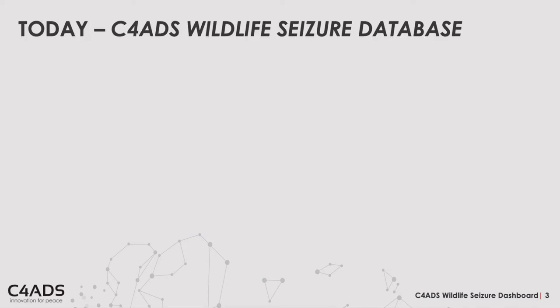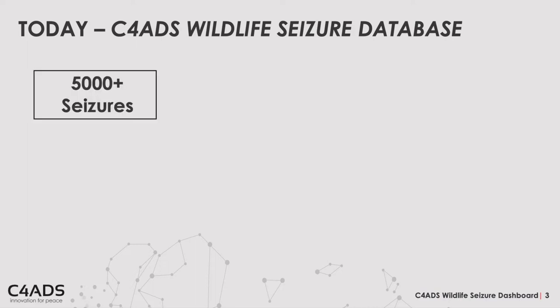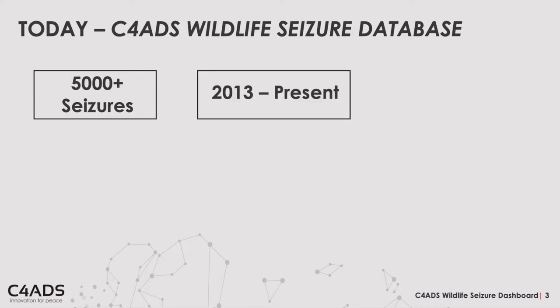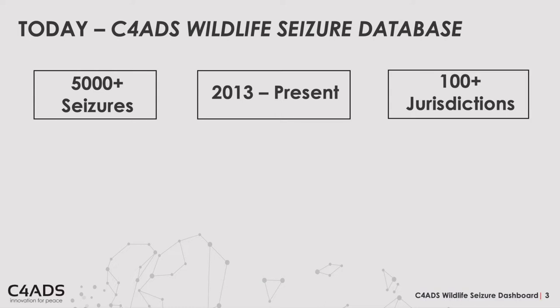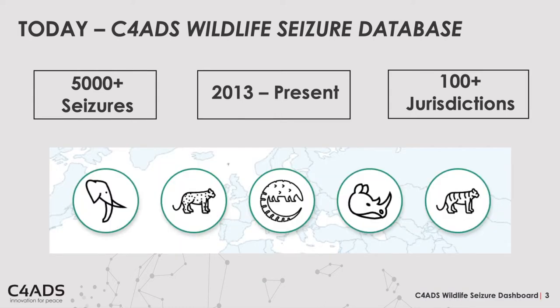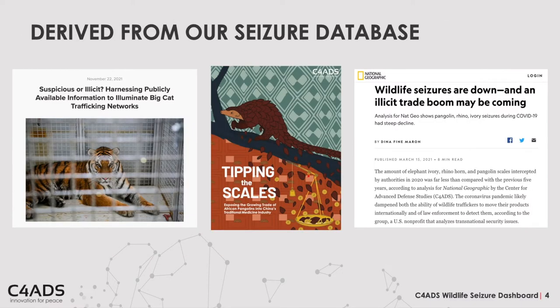Today, the C4ADS Wildlife Seizure Database contains information on over 5,000 seizures from 2013 to the present, spanning over 100 jurisdictions, all transportation sectors, and five key categories of frequently trafficked wildlife: elephant ivory, rhino horn, pangolin products, tigers, and leopards. Since its creation in 2016, analysts at C4ADS have continued to use this database to guide our own internal analysis, as well as to produce public reports and to contribute to news articles on the topic of illicit wildlife trafficking.